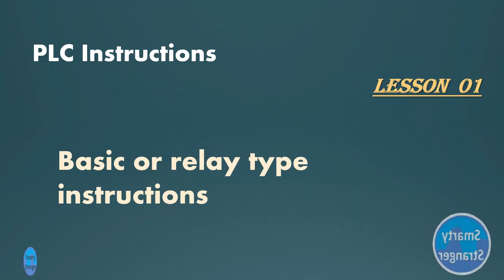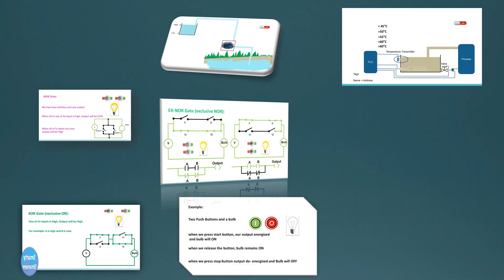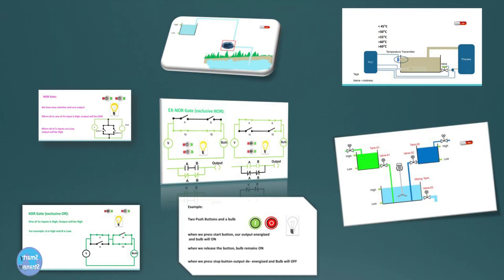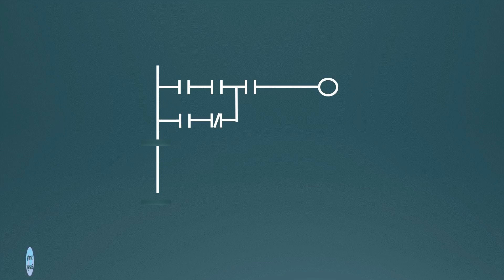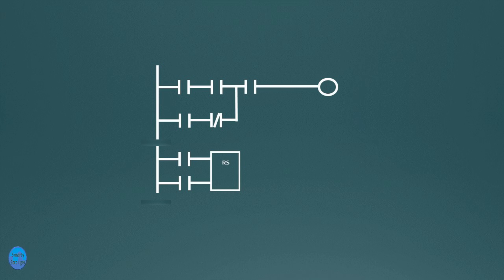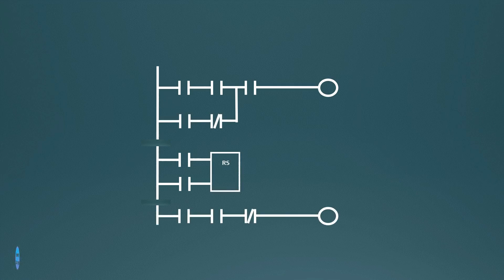Hi guys, in our previous videos we learned about the basics of PLC programming and made many examples using different instructions. If you have not seen our previous videos, go to our channel Smart Stranger and take a look. When we design a program we use multiple instructions to perform one logical operation, chosen according to program requirements. Every instruction has a different working principle. Today we are going to learn about different PLC instructions.